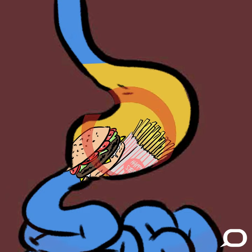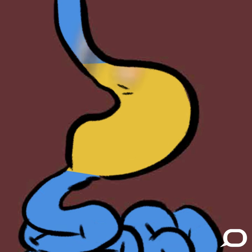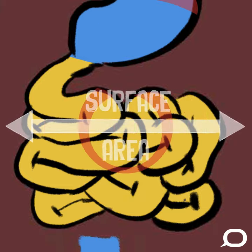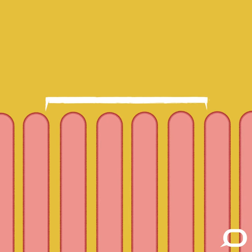Alcohol can be absorbed into the bloodstream through your stomach, but this happens relatively slowly, so your blood alcohol concentration, or BAC, also goes up relatively slowly while it's trapped in there. But if you haven't eaten, alcohol passes quickly into the small intestine, where it's absorbed into your bloodstream a lot faster, mainly because the small intestine has a much larger surface area. The layer of cells that line the inside of your small intestine is called the epithelium, which is composed of several different cell types organized into little finger-like protrusions called villi.